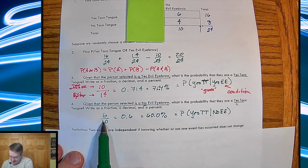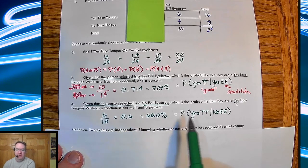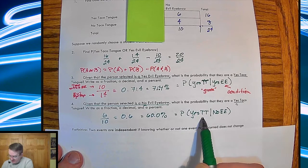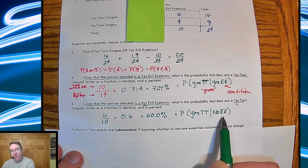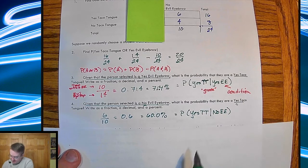So again, my population is now not taco tongue. And I can do six of those, because that condition is our first one. So that's 60%. So the probability that yes, people can taco tongue, if we know that they can't do the evil eyebrow, is that. So again, given, and there's my condition.